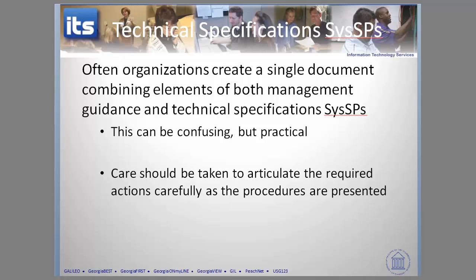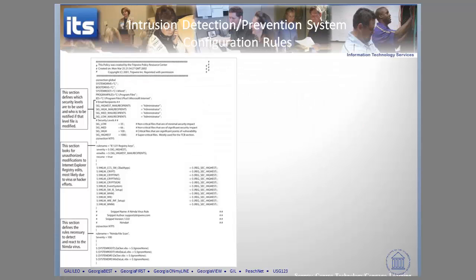Let's look at one last example of configuration rules. This is a segment of a document defining security levels and how they're modified. If you look at this, it shows how specific you have to get within the code — you really need to be able to read a programming language to set up configuration rules. Configuration rules and access control lists are not something the normal user will access. Access control lists are more understandable, but configuration rules are very, very specific.